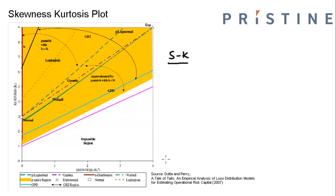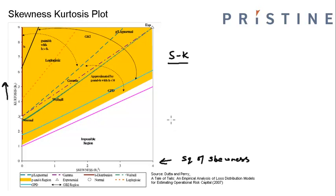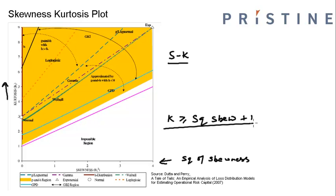To understand the graph, let's see what is on the x-axis and what is on the y-axis. On the x-axis we have square of skewness — this is because skewness can also be negative. On the y-axis we have kurtosis, increasing upward. Now for any distribution, kurtosis has to be greater than or equal to square of skewness plus one. No distribution can violate this criteria, therefore this is the impossible region.